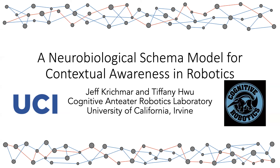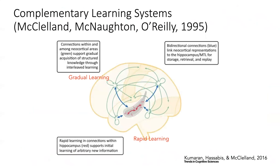This is a neurobiological model of something called schemas, and it gives the robot contextual awareness. We talked about memory consolidation and how there's rapid learning in the hippocampus and then slow consolidation in the neocortex over time. I even mentioned movies with amnesia — the plot line where once you lose your hippocampus, you can't form new memories, but your long-term memories actually stay in place.